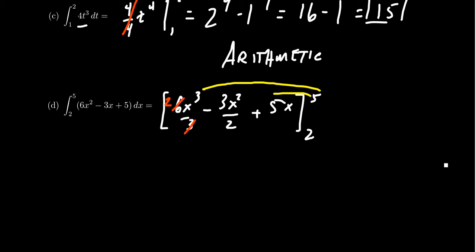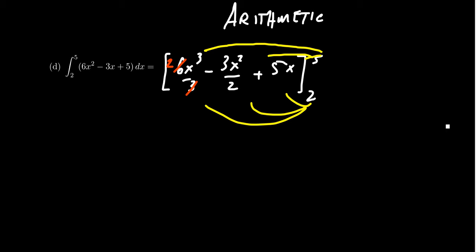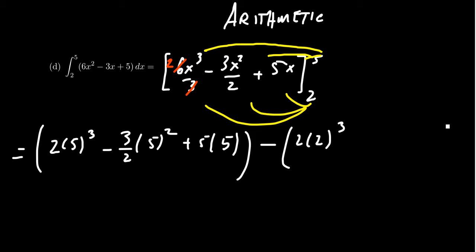Now we're in a situation where we're going to plug in the 5 into each of these places, plug in the 2 into each of these places. This will show you a little bit more why the arithmetic is often considered the most tedious part of this exercise. We're going to first do the case where we have 5. We're going to get 2 times 5^3, minus 3/2 times 5^2, plus 5 times 5. Then subtract from that: 2 times 2^3, minus 3/2 times 2^2, plus 5 times 2.